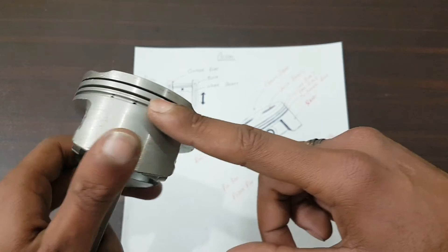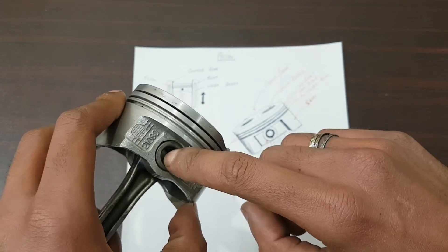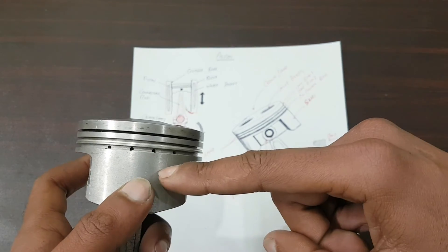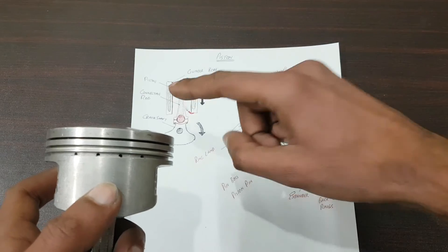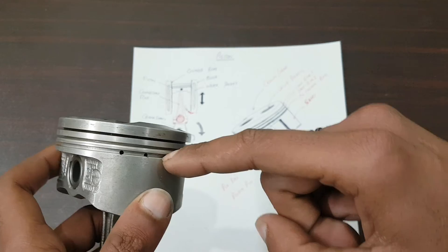From this side, this is known as the piston skirt. This is the pin boss, piston pin, and this is also the piston skirt. The oil expander ring basically collects the oil from the liner, and then the oil flows from here to the inside and falls back to the engine pan.